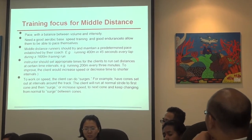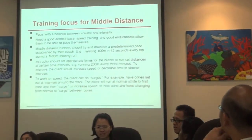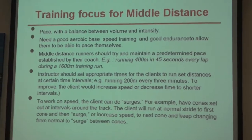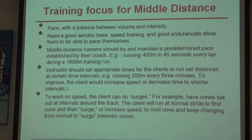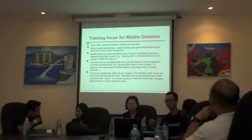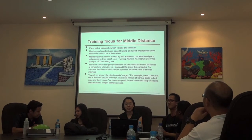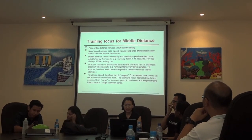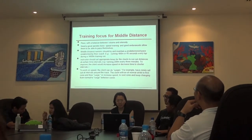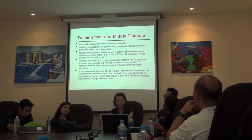Training focus for middle distance is pace — the balance between volume and intensity. You need a good aerobic base, speed training, and good endurance to show them how to pace themselves. Middle distance runners should try to maintain a predetermined pace set by their coach, for example running 400 metres in 45 seconds every lap during a 1,000-metre training run, breaking the distance up into 400-metre segments.